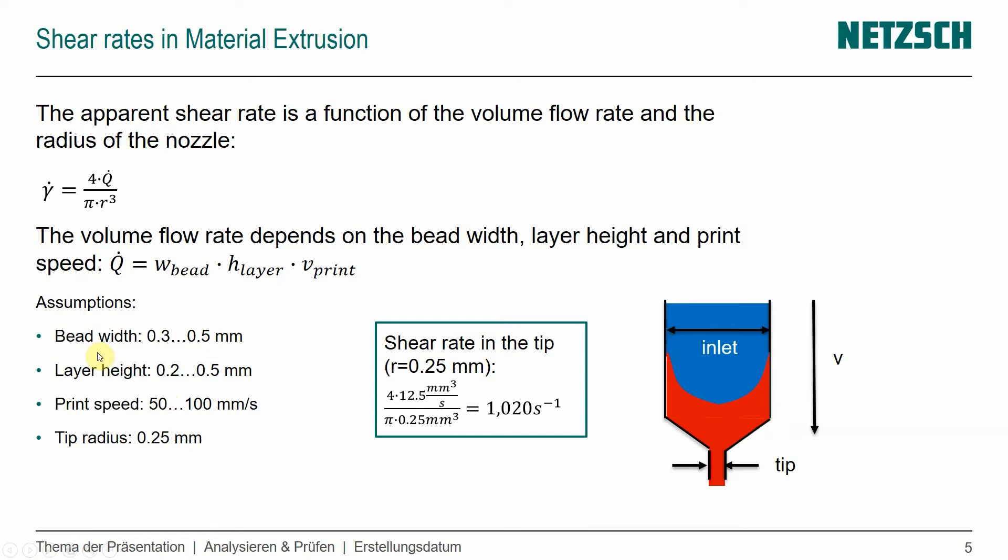Obviously, we're trying to go faster and faster. And the tip radius, which would be this here, so not the nozzle diameter of the extruder, but really of the tip, we'll take 0.25 millimeter.